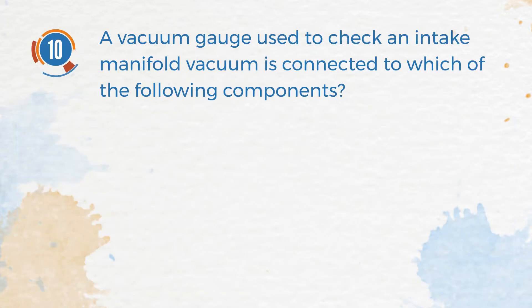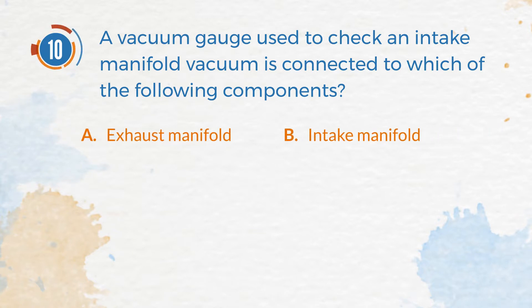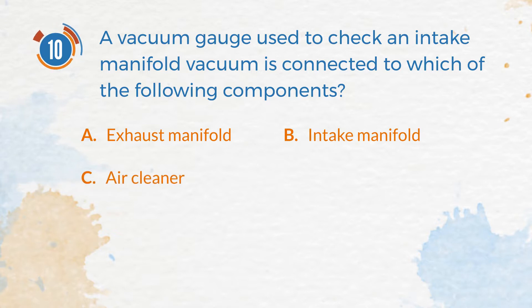Number 10. A vacuum gauge used to check an intake manifold vacuum is connected to which of the following components? A. Exhaust manifold. B. Intake manifold. C. Air cleaner. D. Catalytic converter.